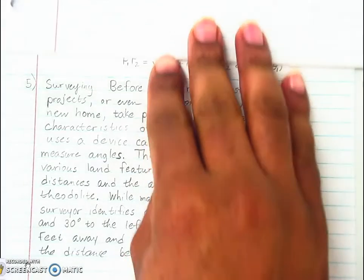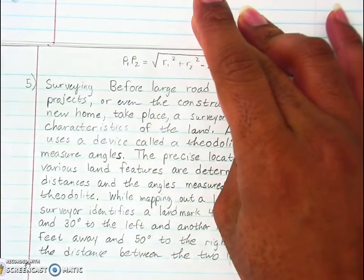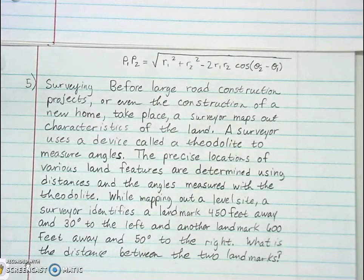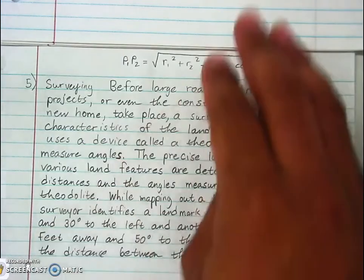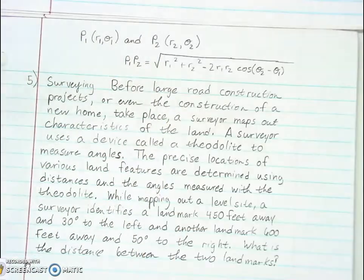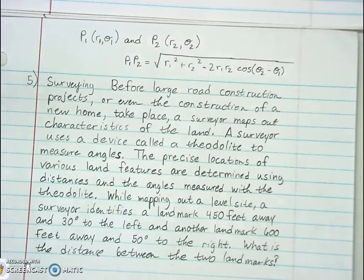So the polar distance formula uses r's and thetas — two r's and two thetas, meaning two coordinate points, p1 and p2. Write that down. They give you two different points, p1 and p2, and you find the distance using the polar distance formula, just like you would use the rectangular distance formula for a rectangular coordinate system.